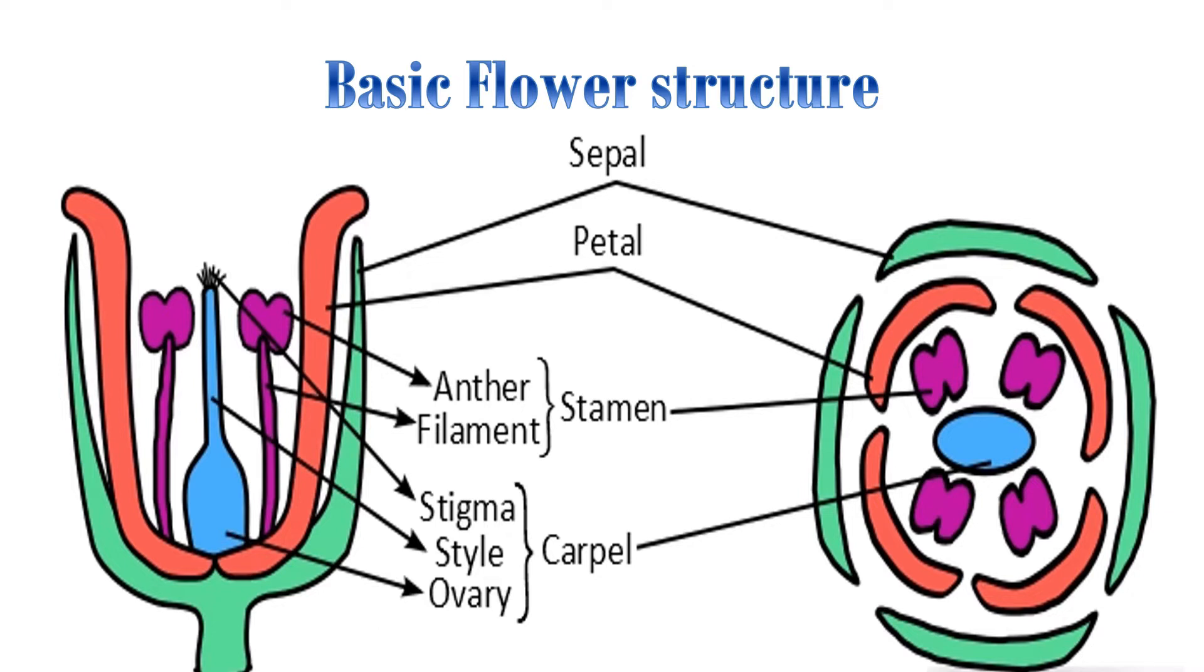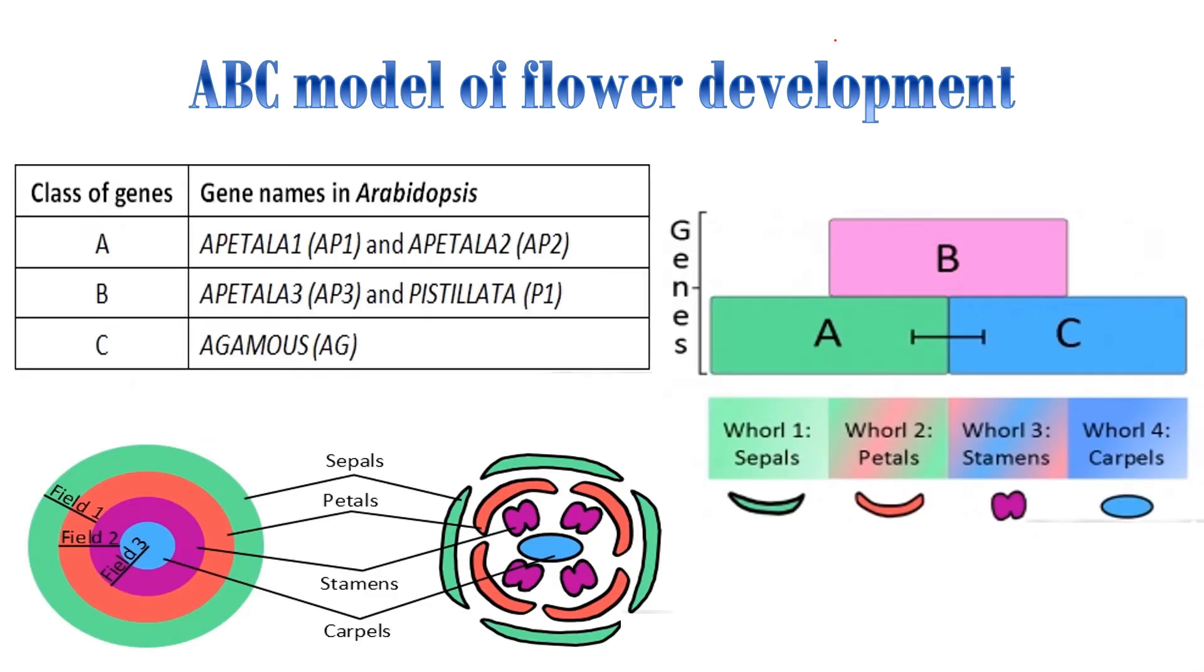The ABC genes activate the expression of other genes causing flower development. Each floral organ type originates from a specific region in the floral meristem due to the expression of ABC genes.